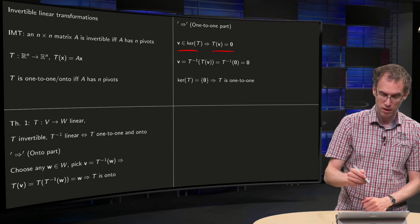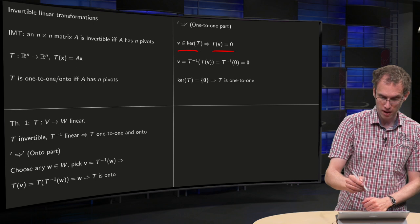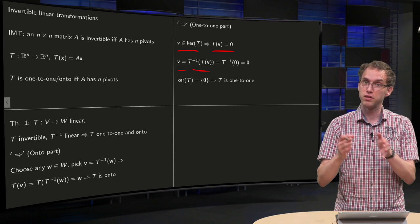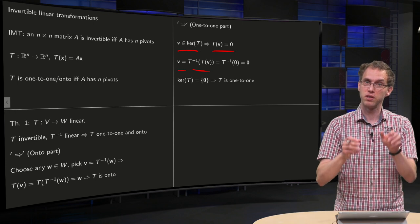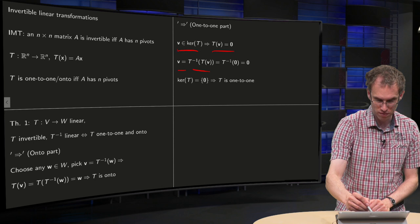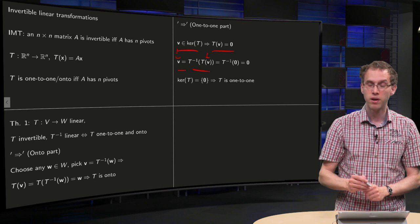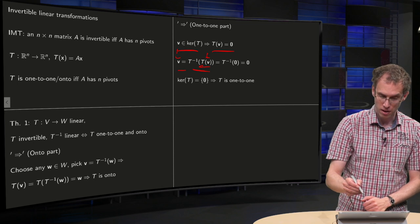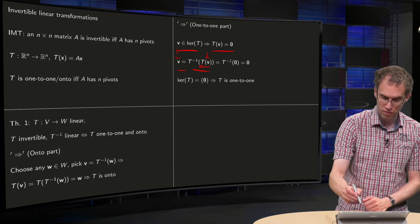Now, if you apply the inverse, then you know that v equals T inverse of T(v), because the T inverse and the T cancel out, so here, here at basic says v equals v. Well, T(v) equals zero, because v is in the kernel of T.